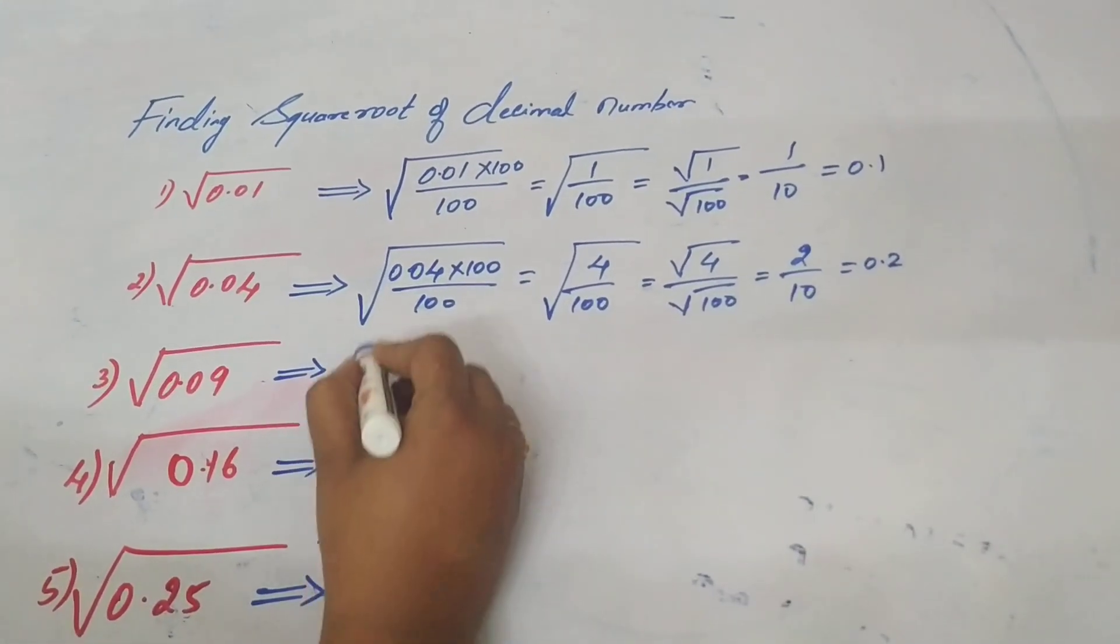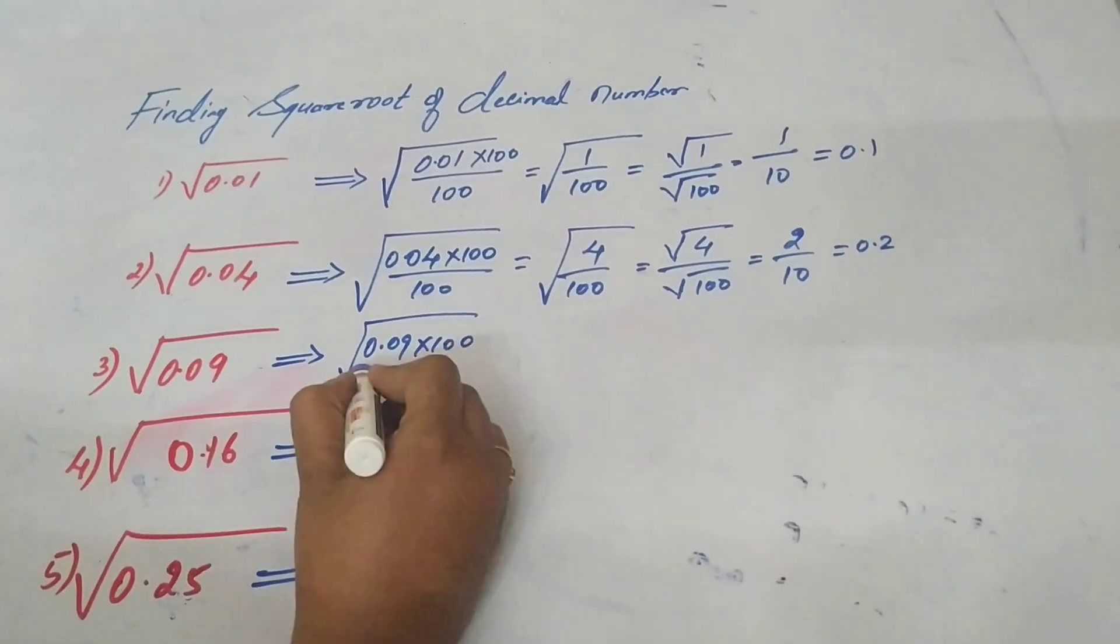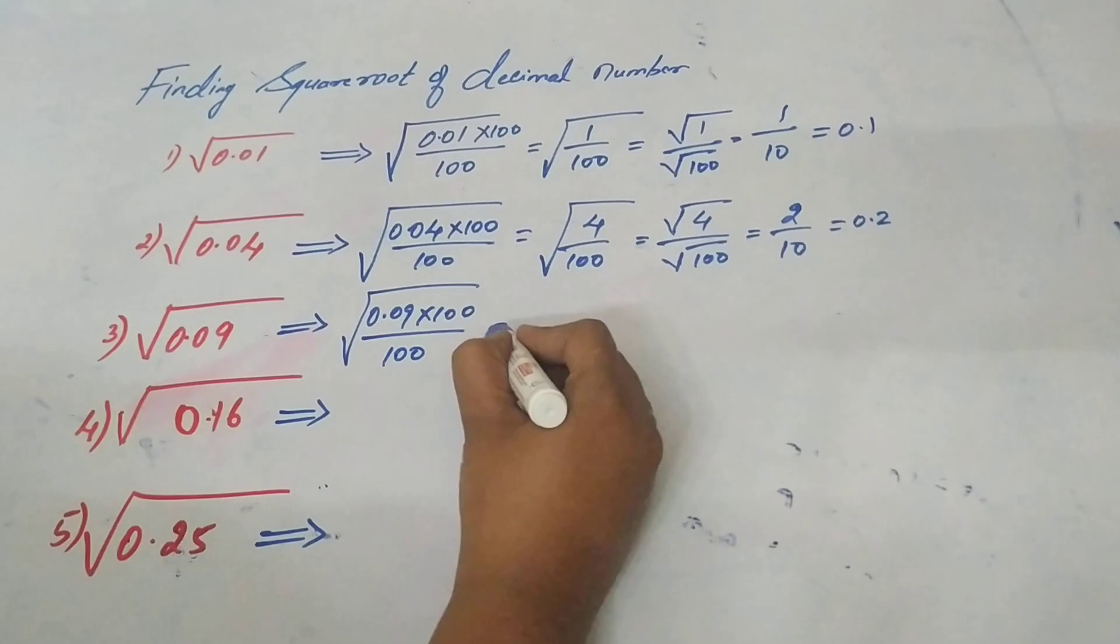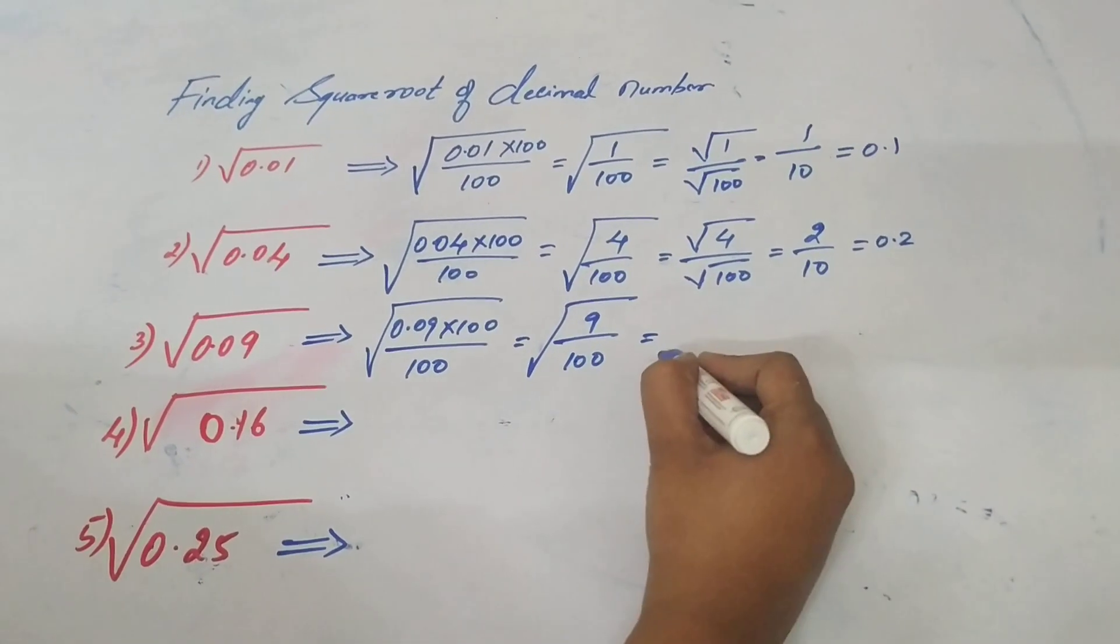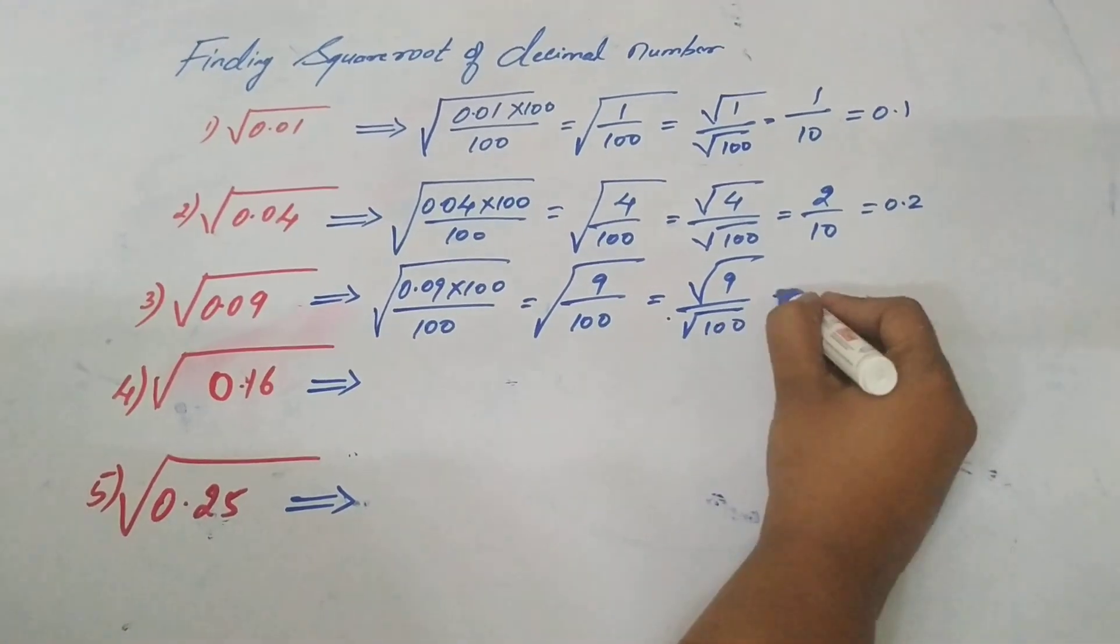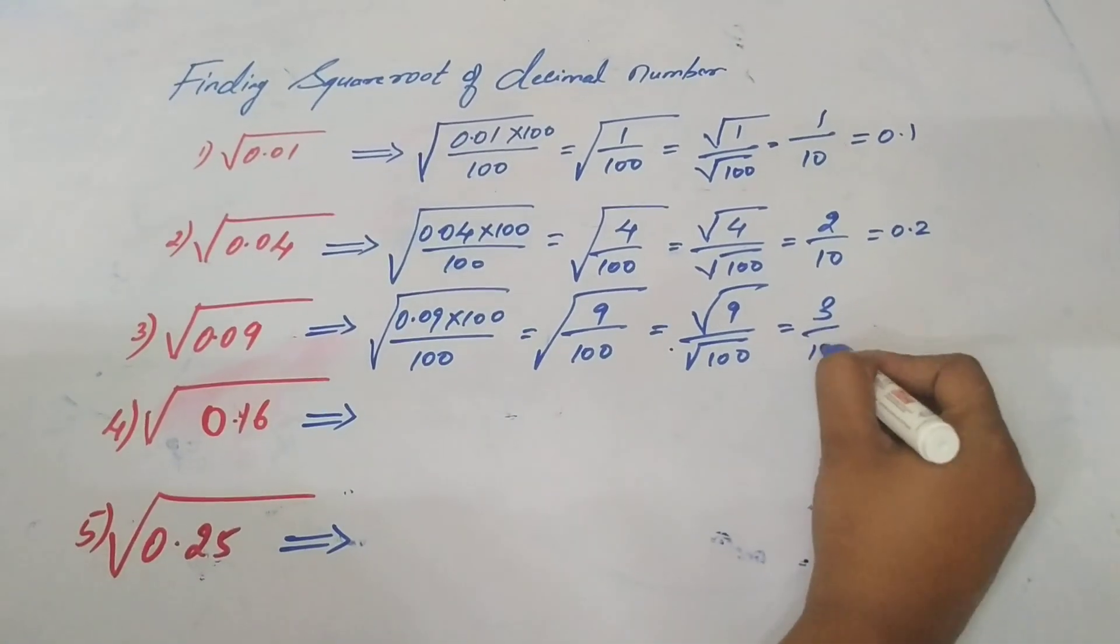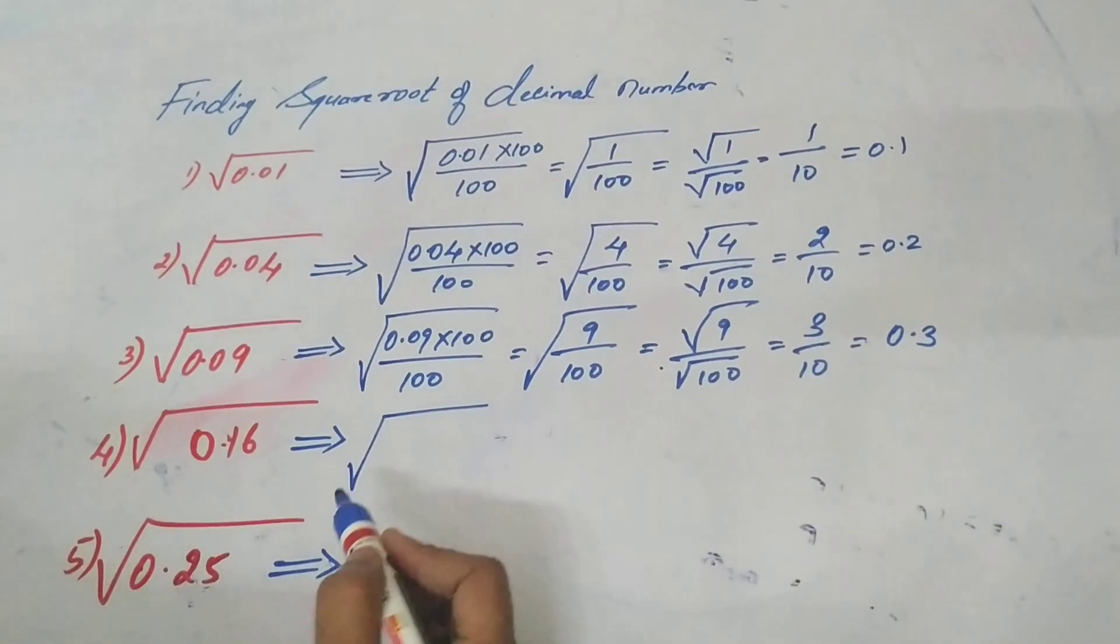The same way, 0.09 into 100 by 100 is equal to root 9 by 100, which is equal to root 9 by root 100. Root 9 is 3 by 10, that is 0.3.